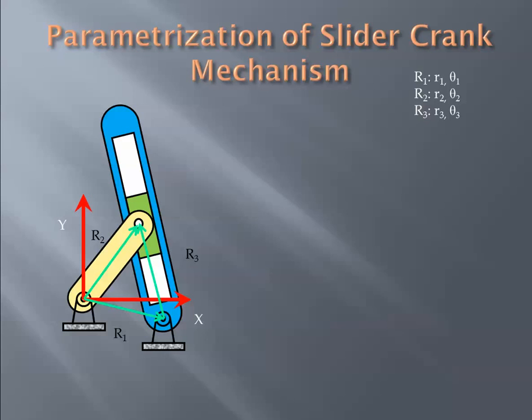Now I want to show to the class that if I have these parameters, by that I mean the r's and thetas, how can I assemble this mechanism or how can I lay out these links on a piece of paper.